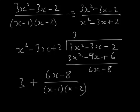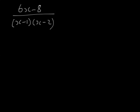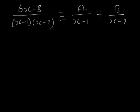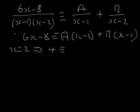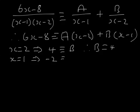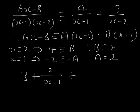So all of this can be written as 3 plus (6x minus 8) over (x squared minus 3x plus 2), which factors as (x minus 1)(x minus 2). Now we put this remainder part into partial fractions: A over (x minus 1) plus B over (x minus 2). Multiplying through: 6x minus 8 equals A(x minus 2) plus B(x minus 1). If x equals 2: 12 minus 8 is 4, and 2 minus 1 is 1, so B equals 4. If x equals 1: 6 minus 8 is minus 2, and 1 minus 2 is minus 1, so A equals 2. The full answer is 3 plus 2 over (x minus 1) plus 4 over (x minus 2).